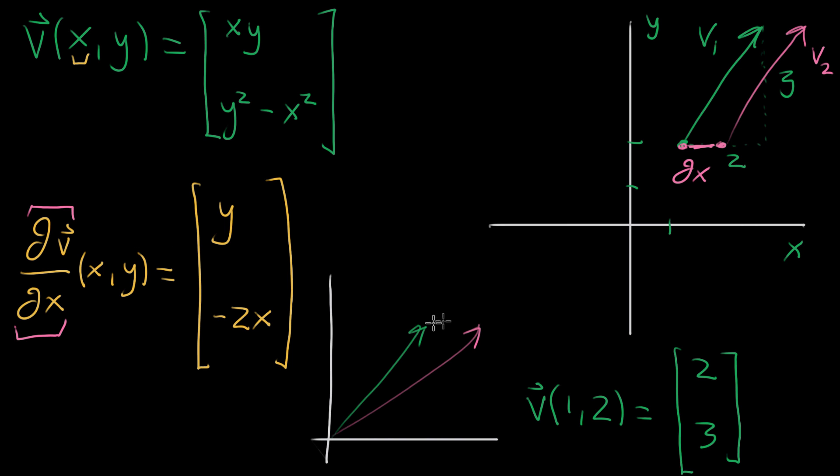The difference between these guys is going to be a vector that connects the tips. And I'm going to call that guy partial V. The way that you can be thinking about this is to say that V1, that original guy, plus that tiny nudge, the difference between them, is equal to V2, the nudged output. And in terms of tip to tail with vectors, you're seeing that the green vector plus that blue vector is the same as that pink vector that connects the tail of the original one to the tip of the new one.